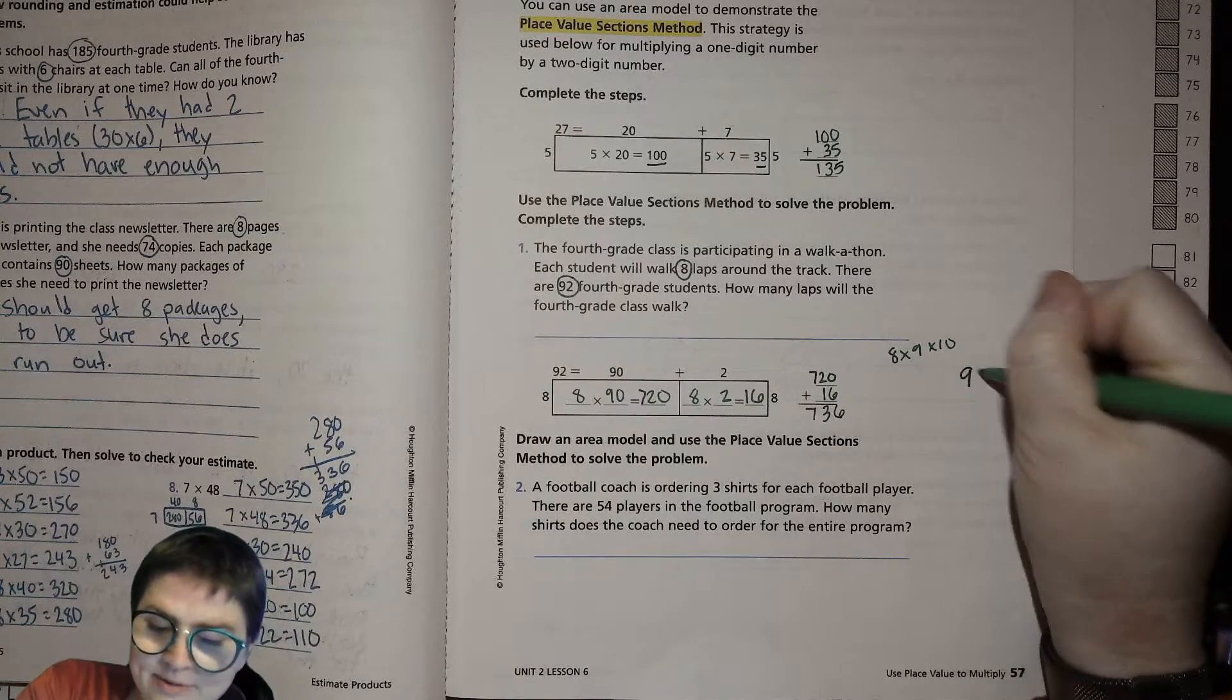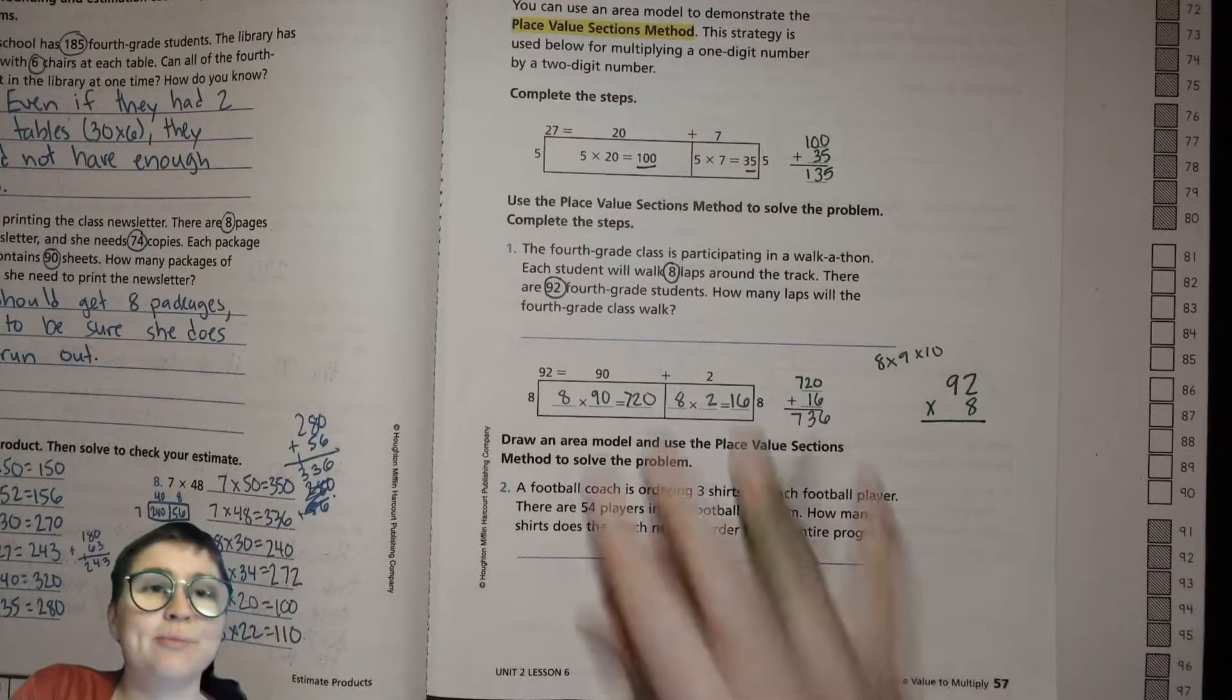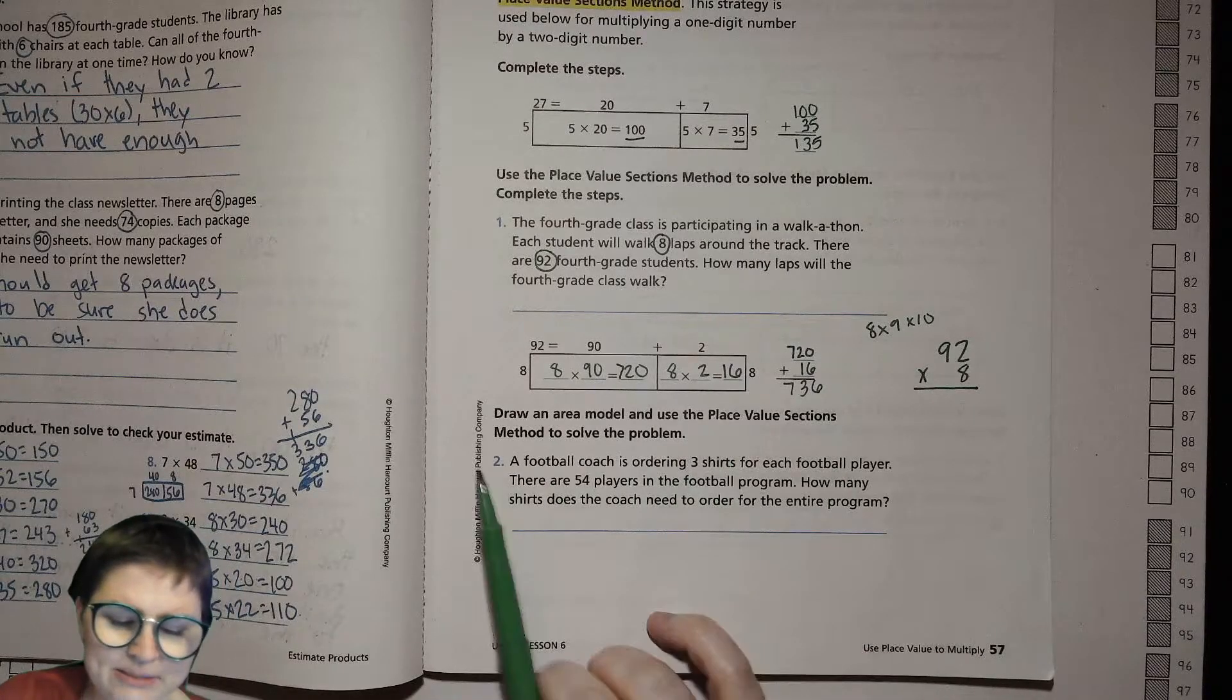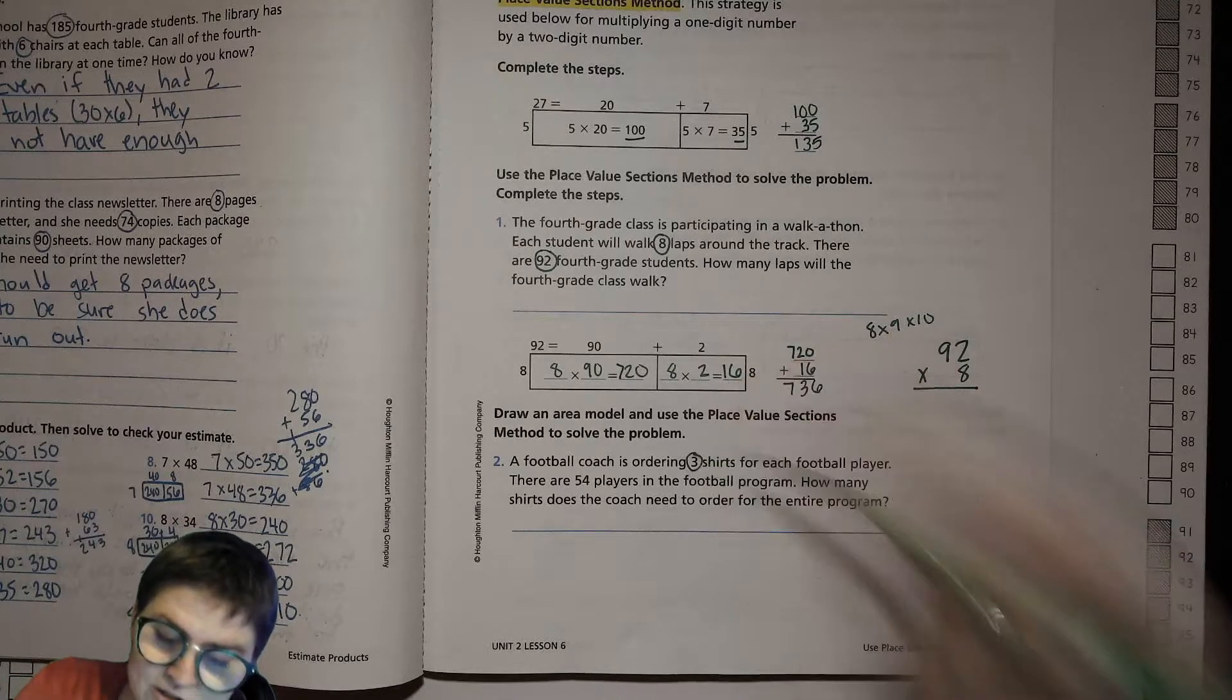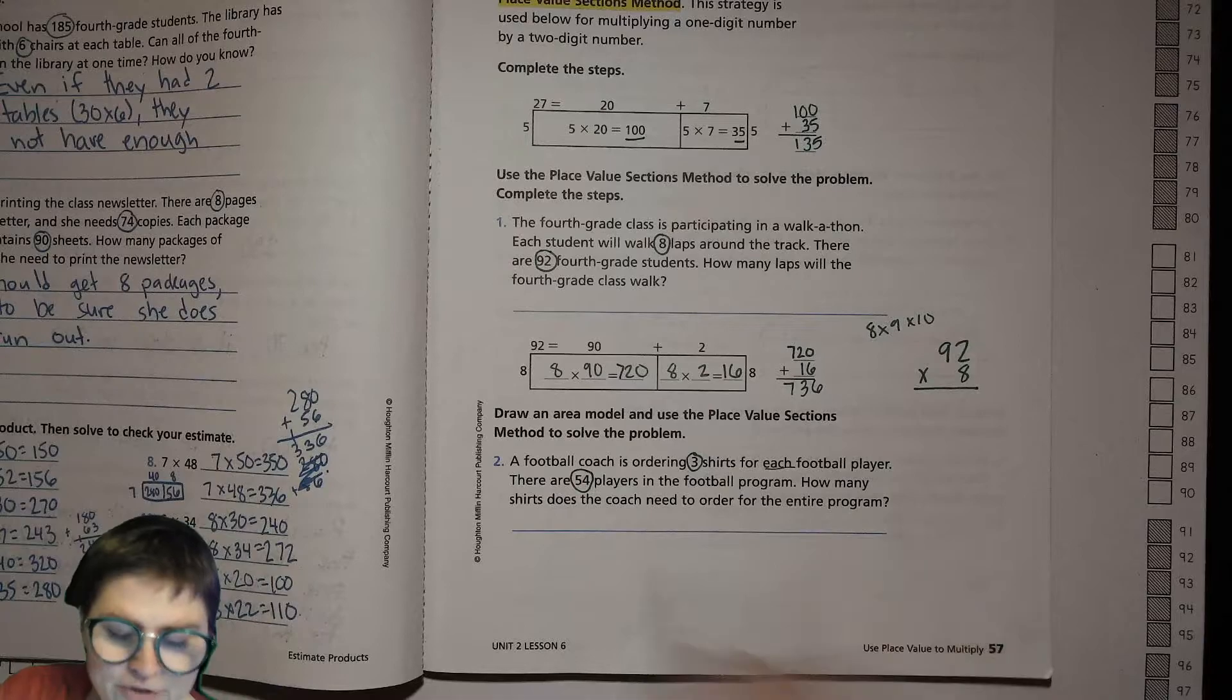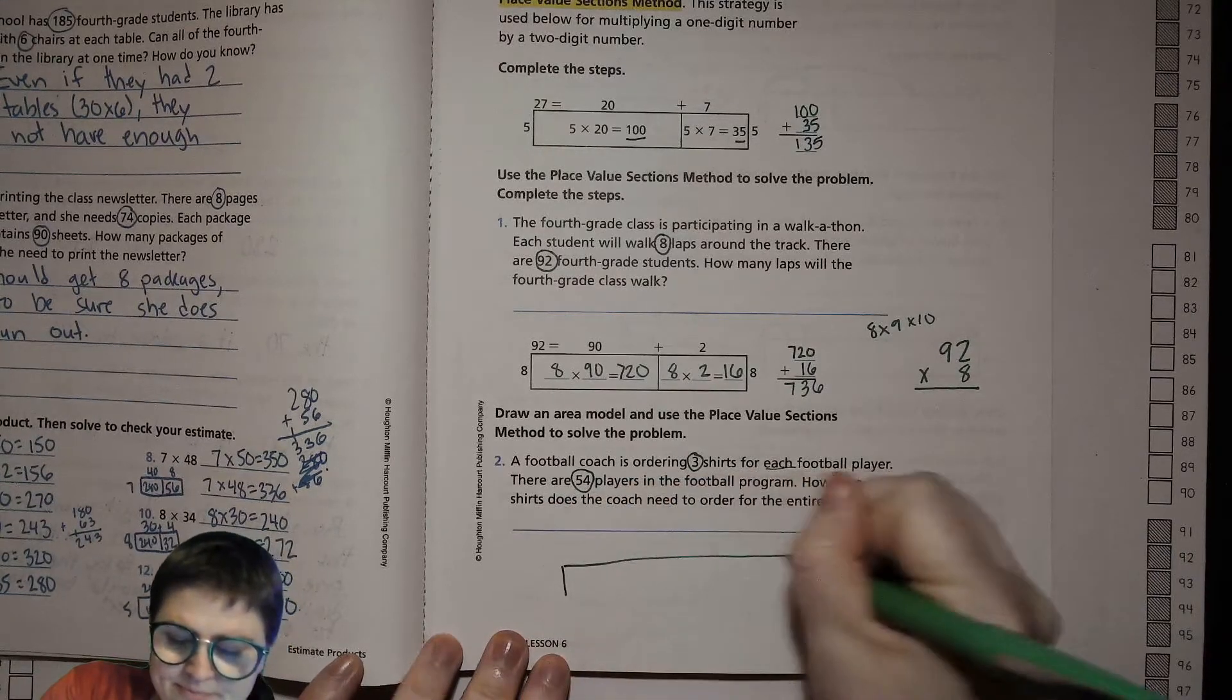I hope you're getting comfortable drawing those rectangles, because we're going to draw our own one right now. Draw an area model and use the place value sections method to solve the problem: A football coach is ordering 3 shirts for each football player. There are 54 players in the football program. How many shirts does the coach need to order? We're going to draw our rectangle, the model.